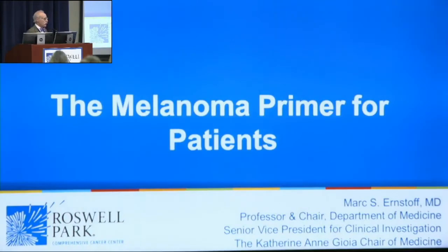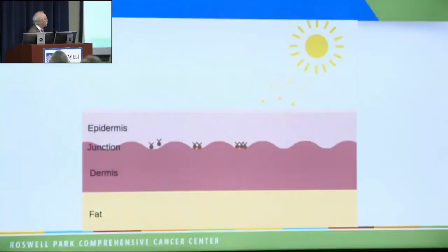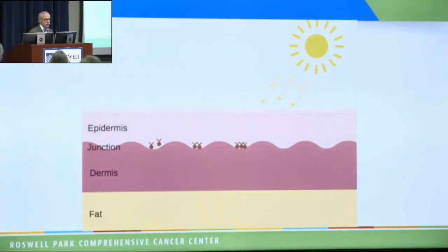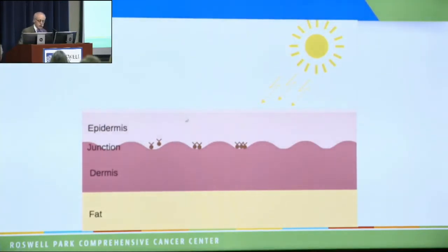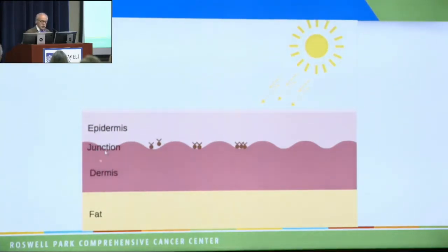This is a primer for patients. This is my impression of what your skin looks like. There's the top part of your skin which is the epidermis, the horny layer which is what flakes off at the top. There's the dermis which is the tissue part of the skin, and under that is the fat. There is a junction between the epidermis and the dermis, and it looks like this under the microscope.